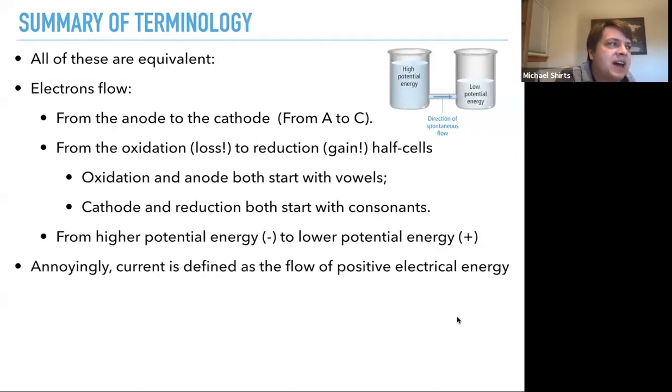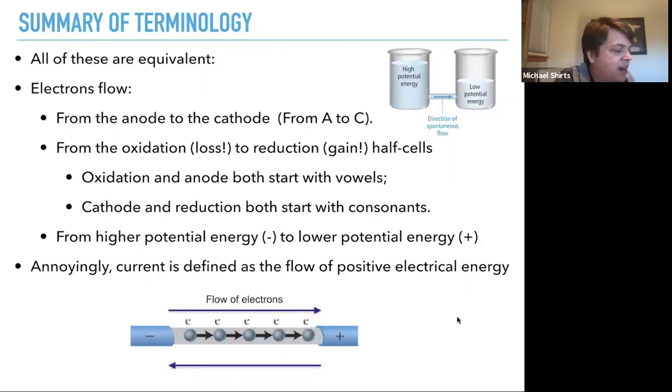One thing that occurs when you start thinking about the electrical circuits as well, annoyingly, current is defined as the flow of positive electrical energy. So if the flow of electrons is this way, the flow of current is actually in the opposite direction if you're thinking about it in electrical terms. I'm going to try to talk about it more in terms of the flow of electrons because that makes a little more sense if you're talking about oxidation and reduction. But do remember that in standard electrical current terminology, the flow of current is the flow of positive electrical energy rather than negative electrical energy. So flow of electrons in one direction actually means a current in the opposite direction.